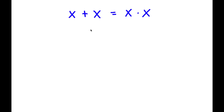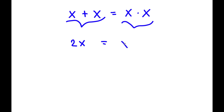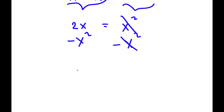In this problem I have x plus x is equal to x times x. x plus x is simply equal to 2x, and x times x equals x squared. So I have 2x is equal to x squared. Now I'm going to subtract x squared on both sides, giving 2x minus x squared equals zero.